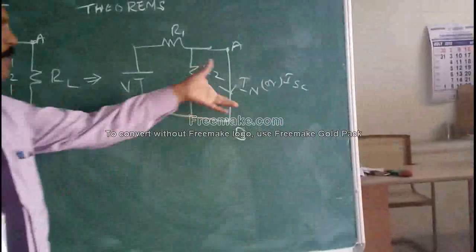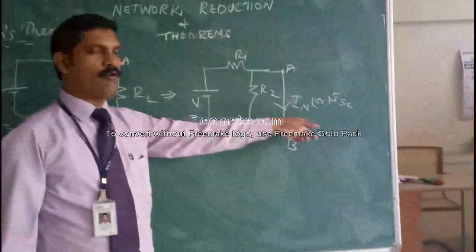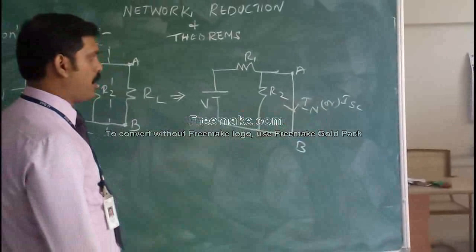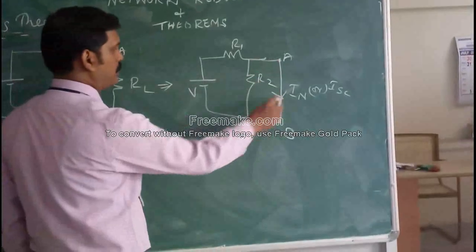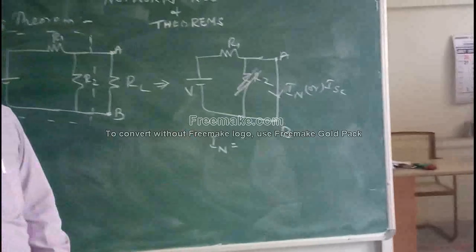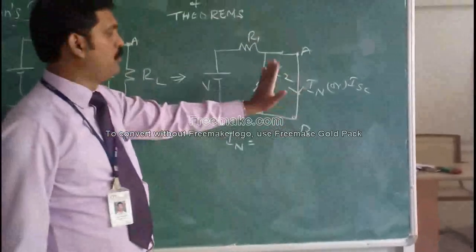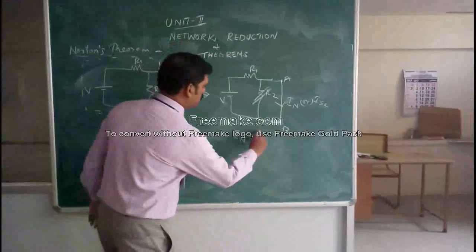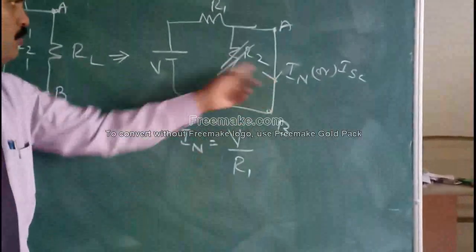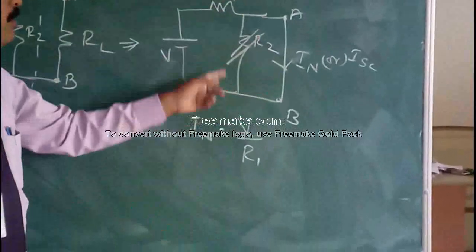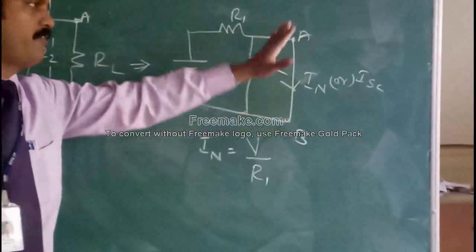In Thevenin's theorem, we opened the terminals and found the open-circuit voltage. Now we have short-circuited terminals A and B to find the short-circuit current IN. Once the terminals are shorted, R2 becomes inoperative because current takes the lowest resistance path — the short-circuit path. So no current flows through R2. The Norton current IN is simply V divided by R1.